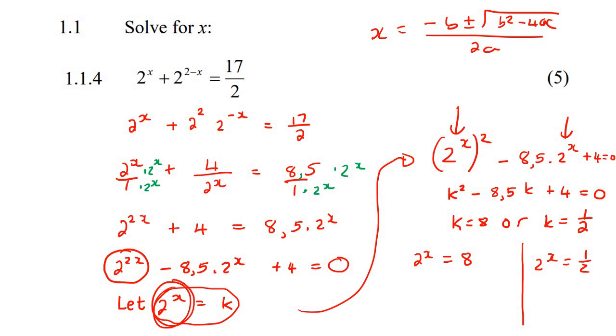Because remember we said here that 2 to the x is equal to k, but then k is 8 or a half. So what I can do is change 8 to 2 to the power of 3, like that, and then the 2s cancel, so x would be equal to 3. So that's our first answer.